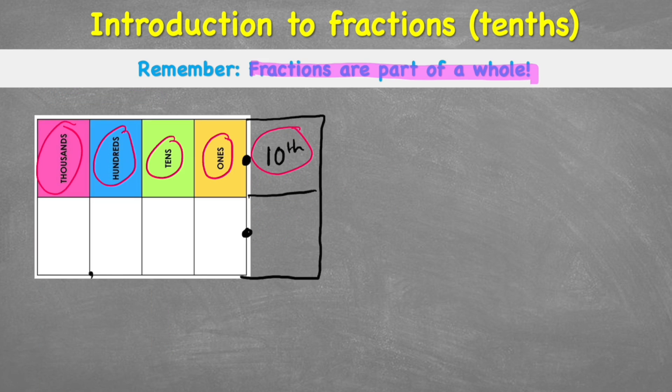So looking back at our place value chart, what we have to understand for this lesson is that this extra column now, our tenths column, is a fraction. It's part of one. So if I had one whole, but I split it into ten pieces, each piece would be worth one tenth. Or in other words, a one in my column.